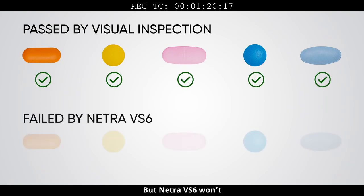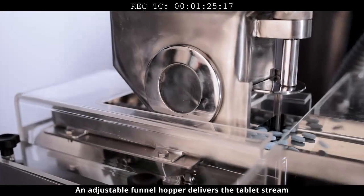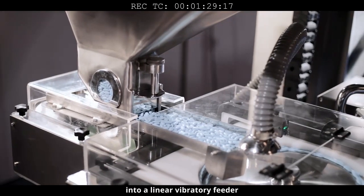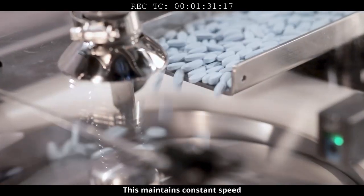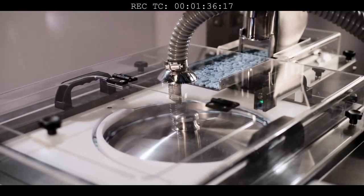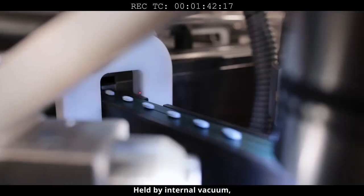An adjustable funnel hopper delivers the tablet stream to a linear vibratory feeder. This maintains constant speed. The servo-operated rotary feeder ensures precise movement of the tablets and delivers to the first conveyor held by internal vacuum.